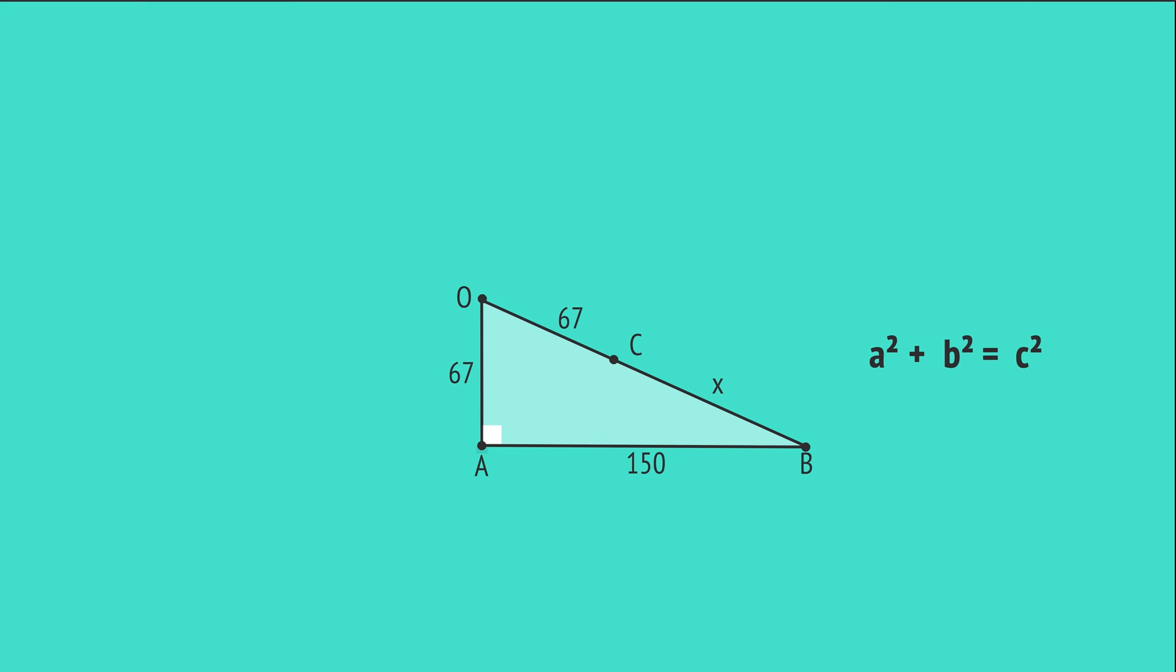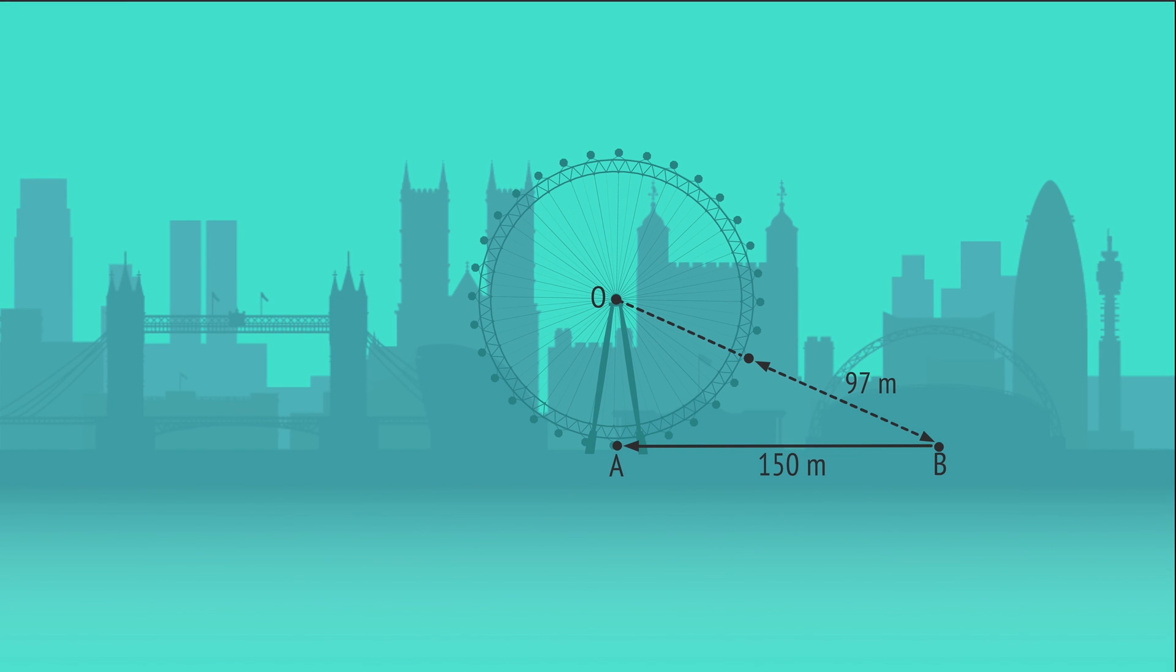So we can use Pythagoras to calculate the hypotenuse OB. Substituting into the formula and taking the square root, we enter this into a calculator which gives the hypotenuse OB as 164 meters. Now we can calculate x as 164 minus 67. And so the minimum distance between the two friends is 97 meters.